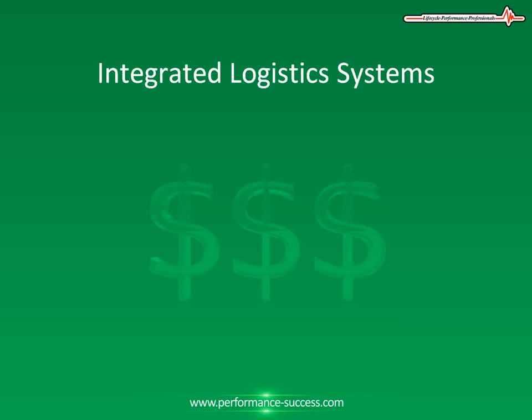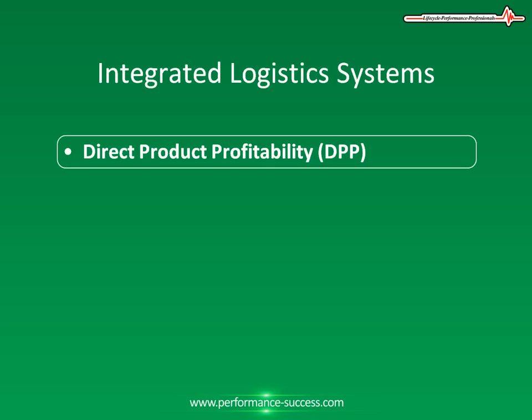Direct Product Profitability (DPP) is a technique of allocating all of the appropriate costs and allowances to a given product. All distribution costs are therefore assigned to a specific product rather than taking an average over the whole product range. Thus, in the same way that a budgetary system operates, the actual costs of distributing a product are monitored and compared to a standard cost determined using DPP. In this way, areas of inefficiency throughout the whole logistics operation can be identified. DPP techniques can also identify the cost of specific products to individual customers, providing invaluable information for effective marketing strategies.